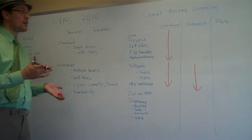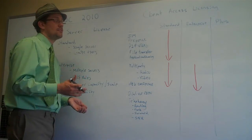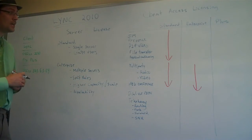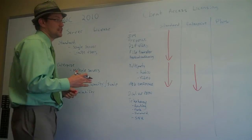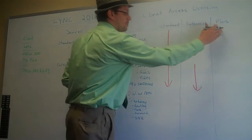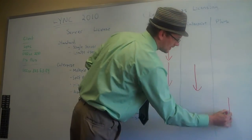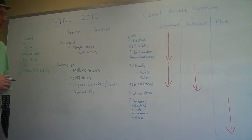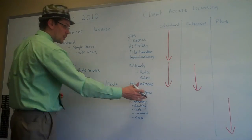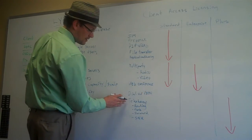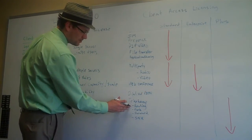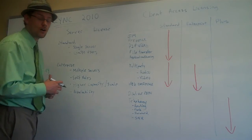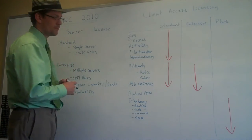Something a lot of my clients are looking to Lync for is the voice capabilities. In order to get the voice capabilities, you're going to have to purchase the PLUS licensing. Some of these features include dial-out to the PSTN phone network, telephony so you can do routing, parking, forwarding calls, as well as single number reach.